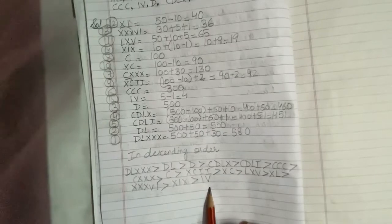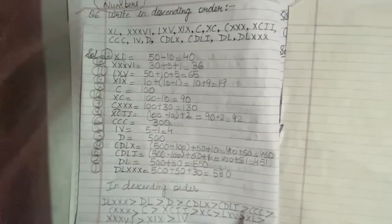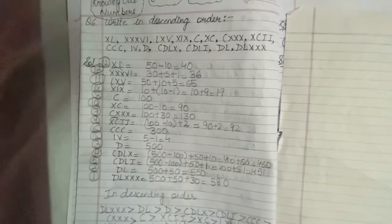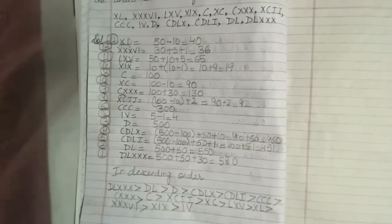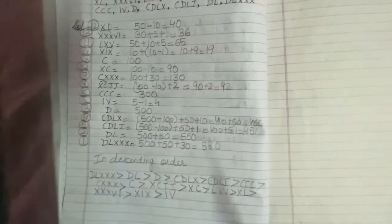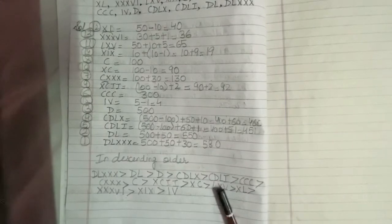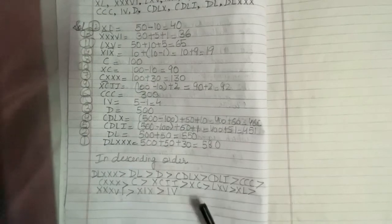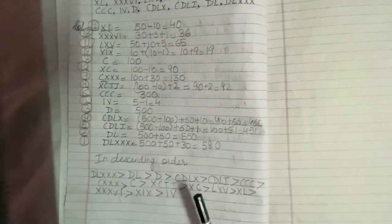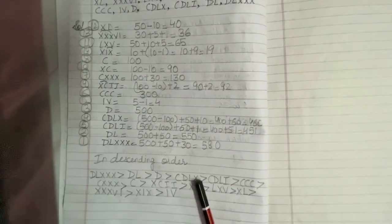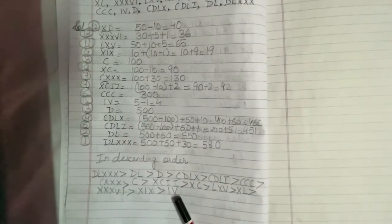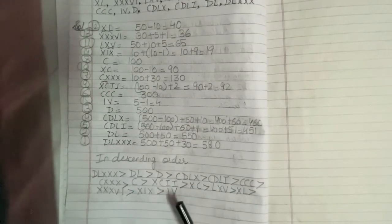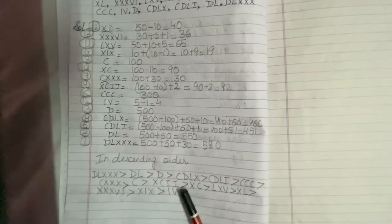I hope this question is also clear to you. After understanding this, you will be able to solve the questions written in the home task, which is attached in the description in PDF form. Our chapter number 1, Knowing Our Numbers, is now over. In the next video, we will start with the next chapter. I hope you liked the video. For any doubts or queries, you can leave a message in the comment section. Thank you.